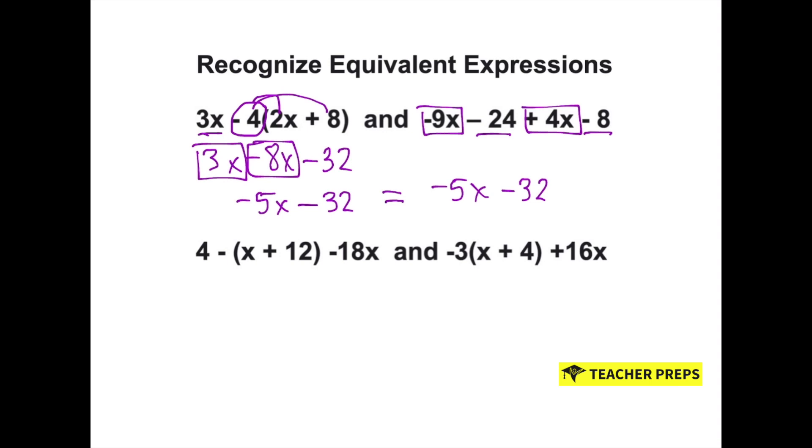Pause the video and try the next one on your own. Now let's see how you did. When you have a negative in front of parentheses, you have to distribute that negative through. It's like multiplying by a negative 1. Negative 1 times x is negative x. And negative 1 times 12 is negative 12.